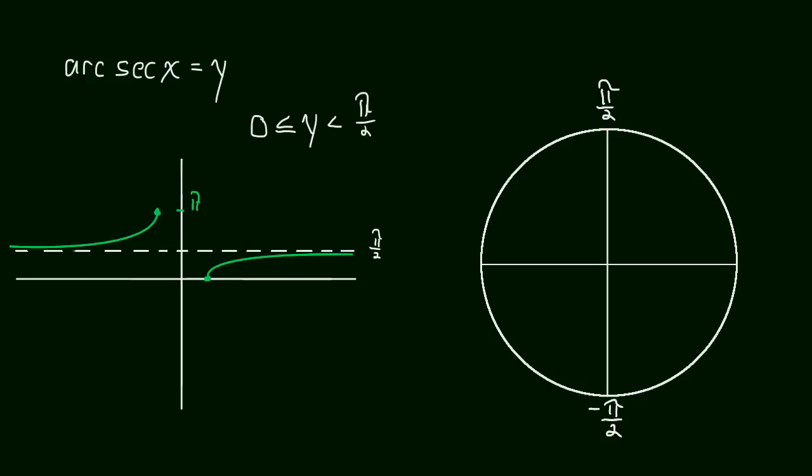So that's this case here, where y is 0, and then it approaches pi over 2, but it never quite gets there. Or, y is greater than pi over 2, greater than pi over 2, and less than or equal to pi.